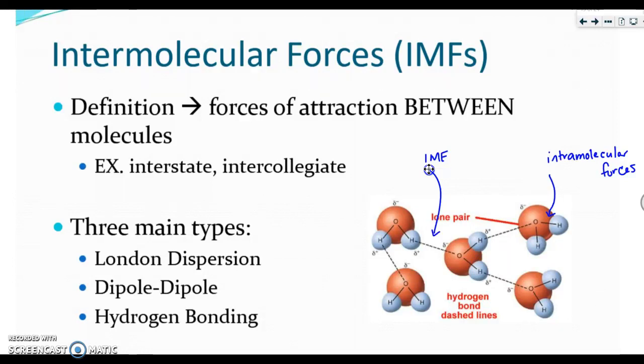There are three main types that we will be discussing for IMFs. They are called London dispersion, dipole-dipole, and hydrogen bonding. Let's cover them in more detail now.